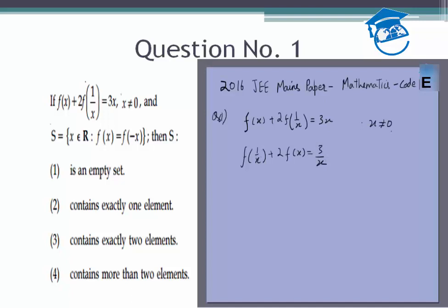From these two we can eliminate f(1/x) to get f(x). This gives me f(1/x) = 3/x - 2f(x), which means f(x) + 2 times (3/x - 2f(x)) = 3x. This gives minus 4, so minus 3f(x) = 3x - 6/x.